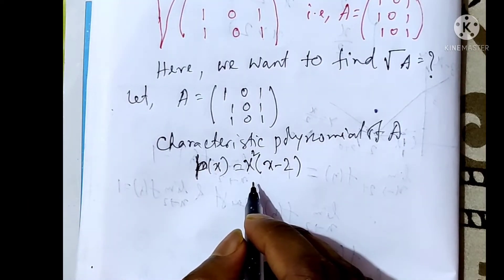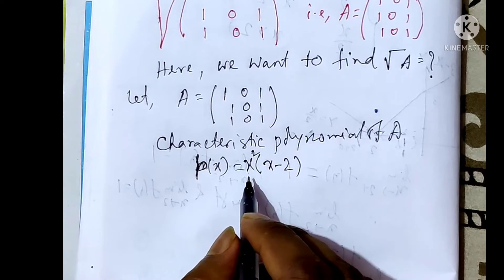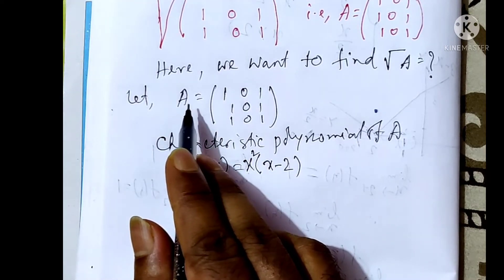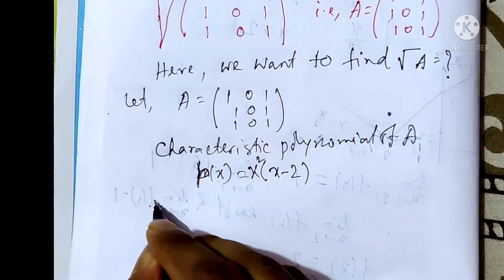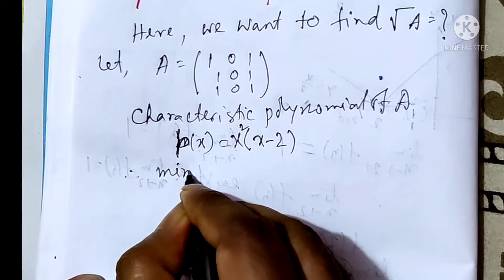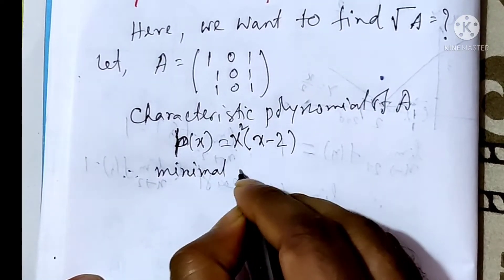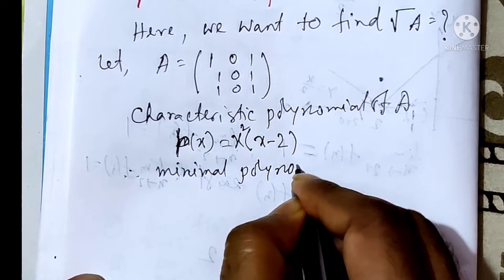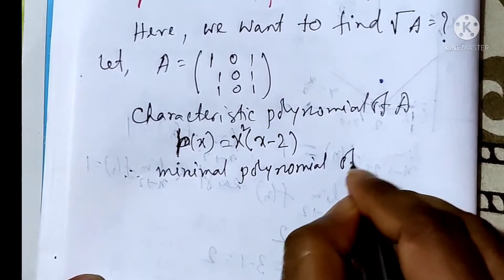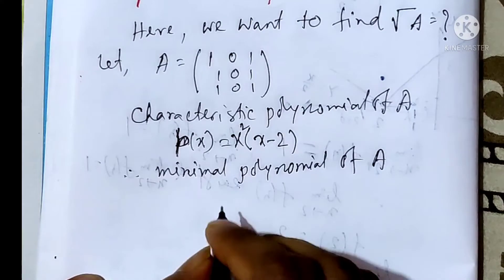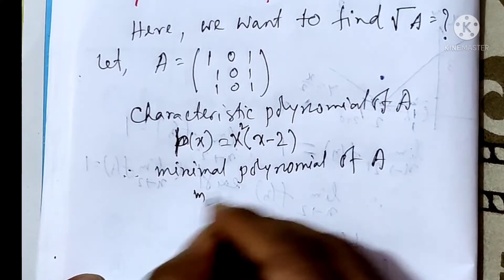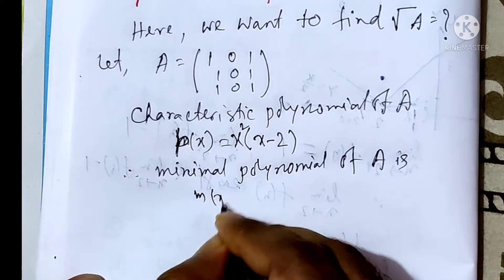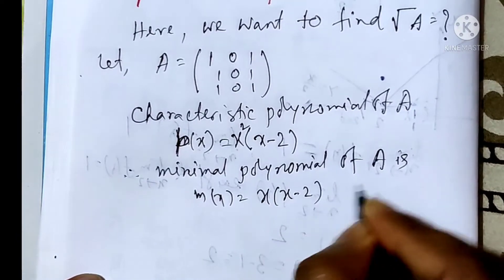Now, obviously we see that A is diagonalizable. Therefore, the minimal polynomial of A is m(x) equals x times (x minus 2).